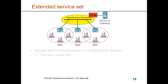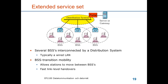Here we show an extended service set — a set of multiple cells, so several basic service sets connected together with a local area network referred to as a distribution system. The distribution system can be connected via a portal to reach a gateway to the internet or to other local area networks. It can be a wireless system using 802.11, or a wired system using the 802.3 family. The extended service set supports mobility between different BSSs, allowing stations to move from one BSS to another with fast link-level handovers.